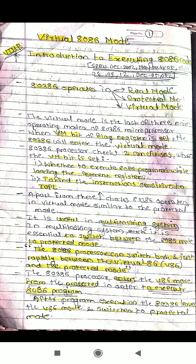This mode is useful in a multitasking system. Multitasking means the 80386 processor is able to perform multiple tasks at the same time — multiple tasks can run simultaneously. In a multitasking system, it is necessary to switch between the 8086 mode and protected mode. The processor 80386 can switch back and forth rapidly between the virtual 8086 and the protected mode.